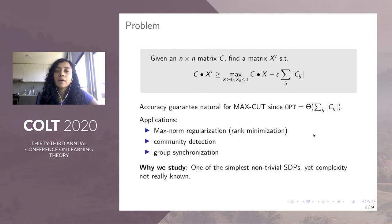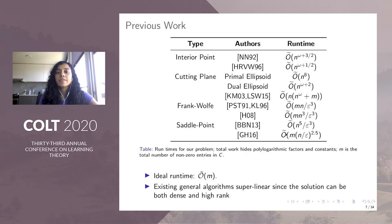The reason we study this problem is that it's one of the simplest non-trivial SDPs, yet we do not know much about its computational complexity. As can be seen from this table of previous results on this problem, the runtimes are not really natural. Ideally, we would want the runtime for this problem to be O tilde of M, where M is the number of non-zero entries in the cost matrix C. Most of these runtimes are super linear in N because the solution can be high rank and dense.